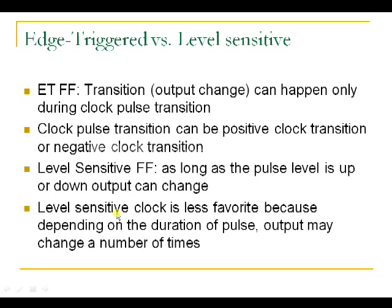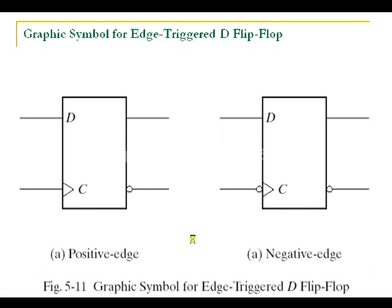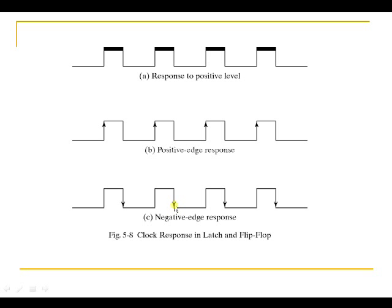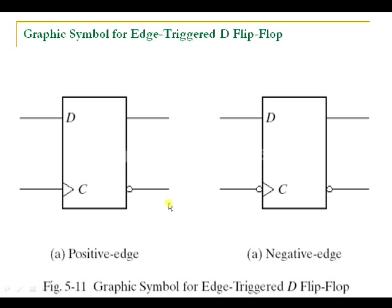Here you can see the positive level — during this level, whatever input is present is processed and the output is produced. But for positive and negative edge-triggered flip-flops, only during those specific edges does the flip-flop process the input. In the graphical symbols, an arrow on the clock input represents a positive edge, while an inverted arrow (inverting clock input) represents a negative edge flip-flop.